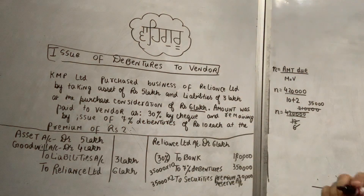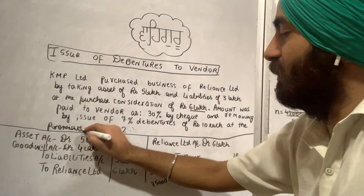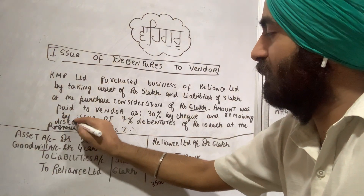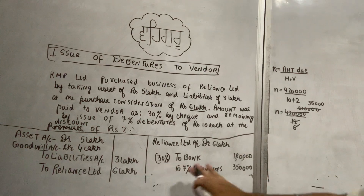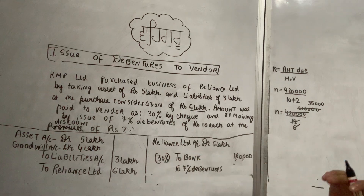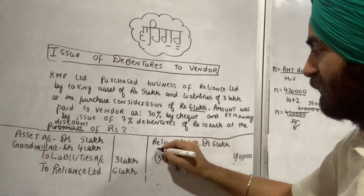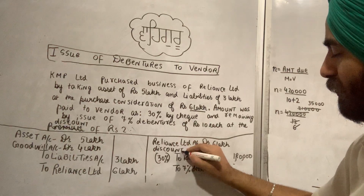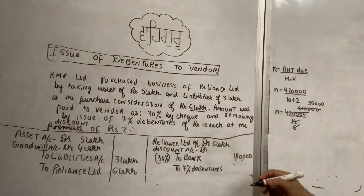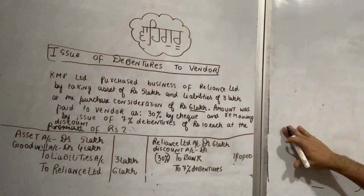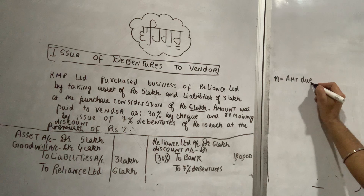I will also give you a note on the discount scenario. If debentures are issued at a discount instead of a premium, the discount amount is treated differently. The formula for number of debentures remains: N = Amount due ÷ Market Value, but the market value will be below face value in a discount case.